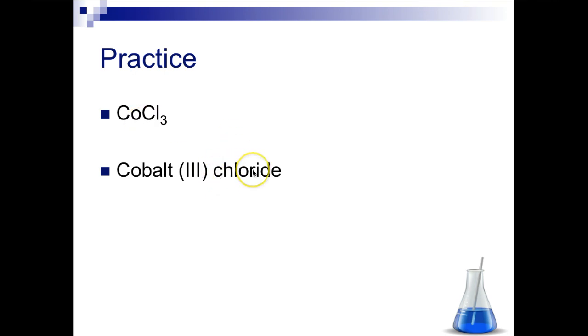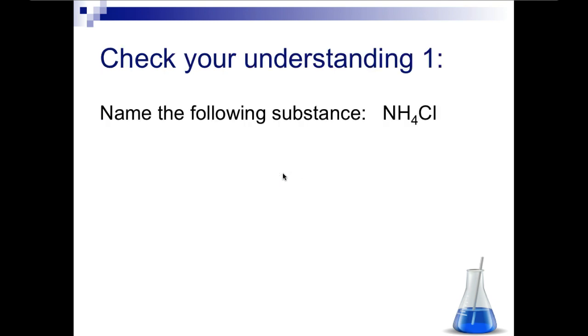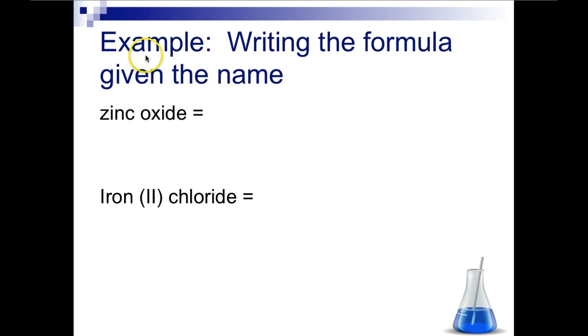Check your understanding. We're going to go over this one in class: name the following substance NH4Cl. Then I want you to write the formula given the name. For zinc oxide, you would have Zn with a 2+ charge and O with a minus 2 charge, and you would get ZnO. For iron(II) chloride, you would have Fe with a plus 2 charge, the chloride ion is Cl minus 1, so when we criss-cross these, we get FeCl2.